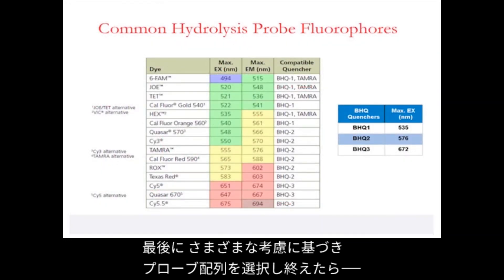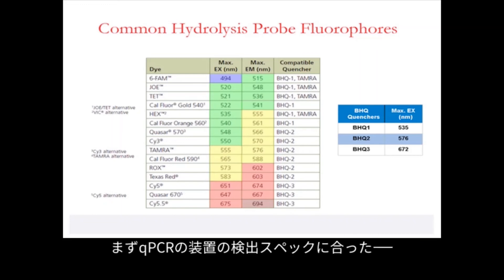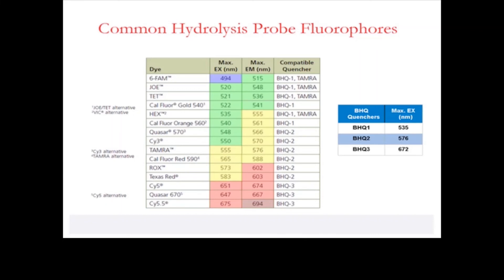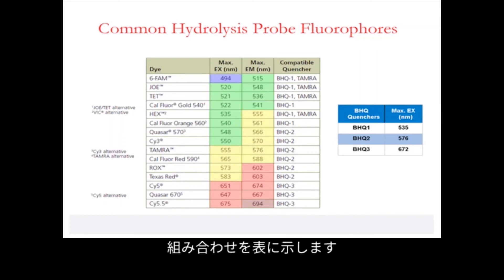Once you have decided upon a good probe sequence based upon the various considerations we have discussed, it is time to move on to the choice of 5' reporter and 3' quencher molecules. The emission spectrum of the reporter molecule should match the detection characteristics of your qPCR system, and the 3' quencher must be matched to the 5' reporter. The table shown in this slide contains a number of the most popular reporter and quencher combinations available from Sigma custom products, though the list is by no means exhaustive.